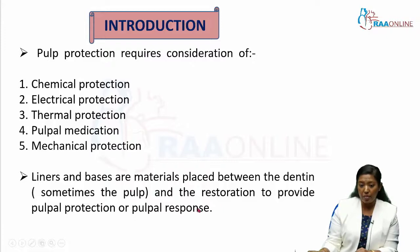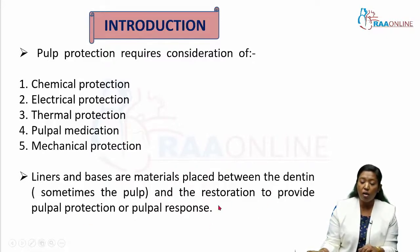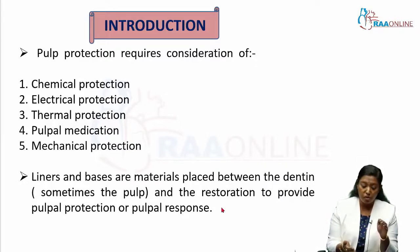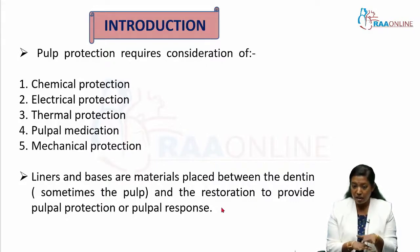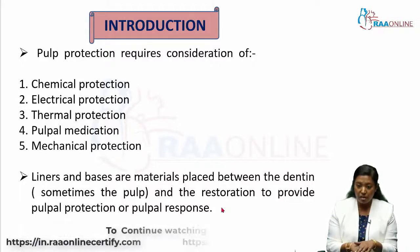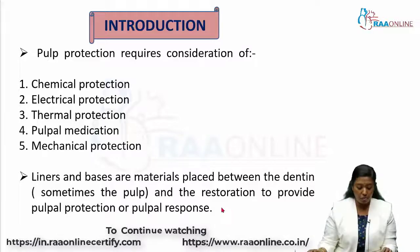So what are liners and bases? Liners and bases are materials that are placed between the dentin — and sometimes the pulp — and the restoration, to provide pulpal protection or a pulpal response. The liner or base is placed between the dentin and the permanent restoration on top, or sometimes it may be placed directly on the pulp with the restoration on top.